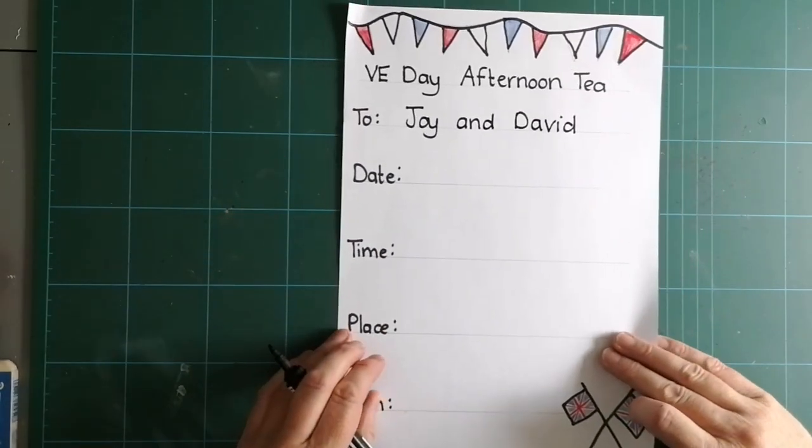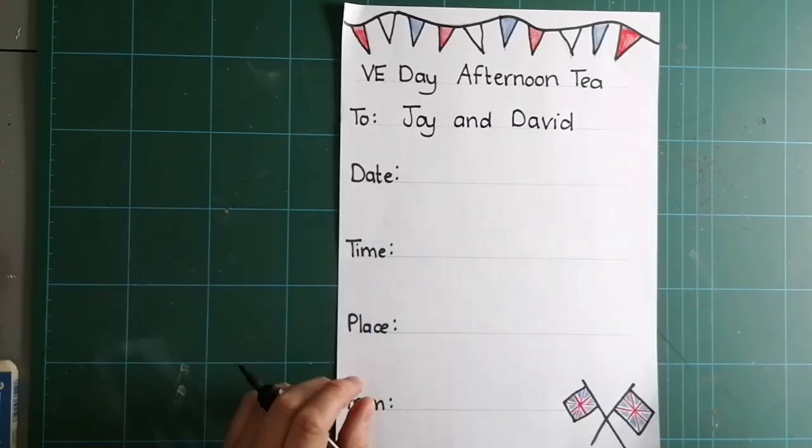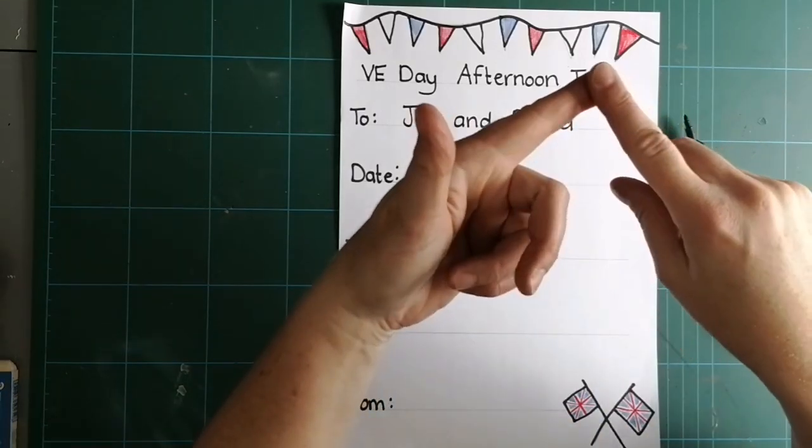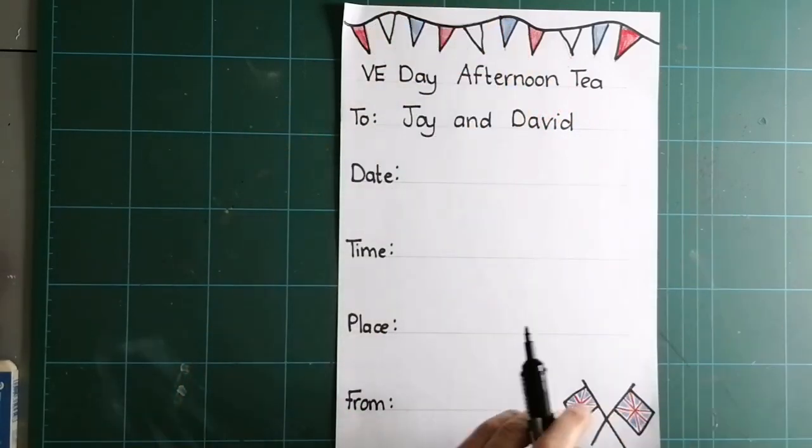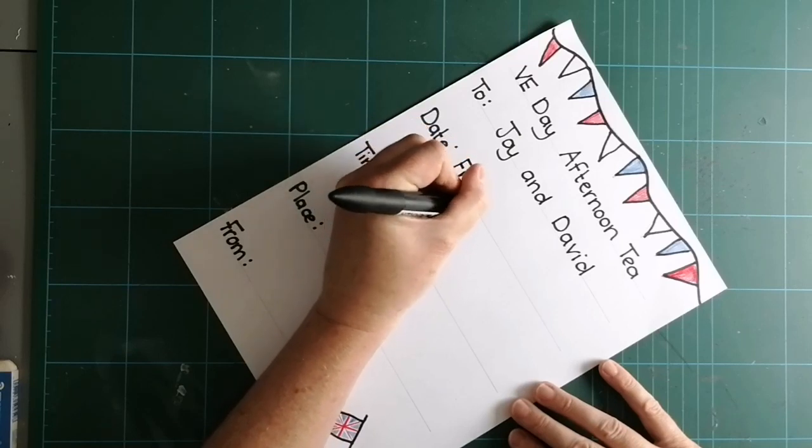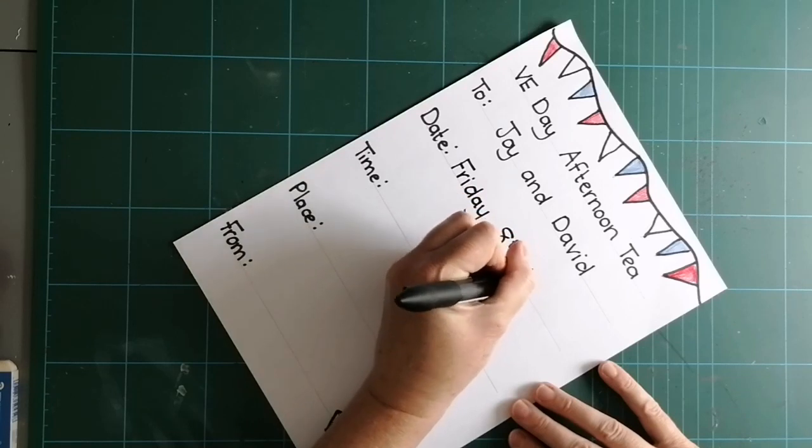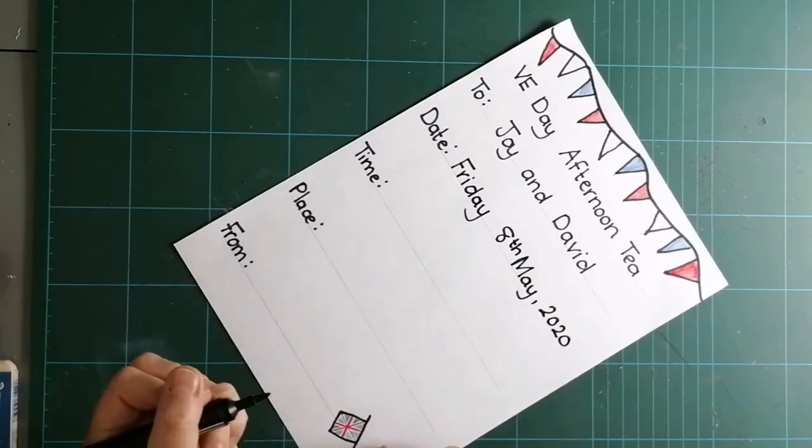Now, it's happening on Friday. Let's work out the date. Today is the, Mrs Richards has really got to work this out now. So, today is the 4th. So, Monday the 4th, Tuesday the 5th, Wednesday the 6th, Thursday the 7th, Friday the 8th of May. Friday 8th of May. And what's the year? 2020. 2020.